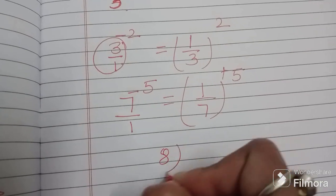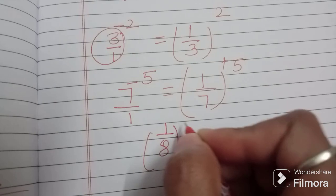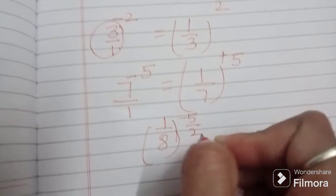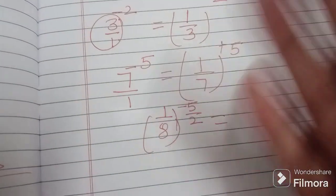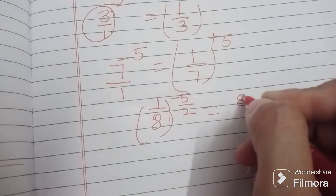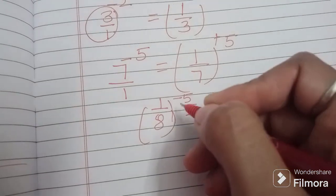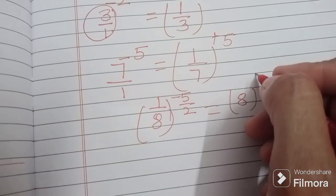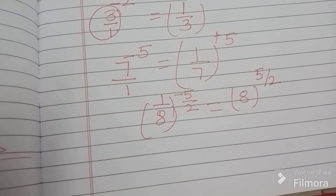Okay, if you have 8 raised to the power minus 5 over 2, now this power you have to make positive. So if you want to do this, it will become 1 over 8, and this will come up as 5 over 2. The power, what was it? Positive.